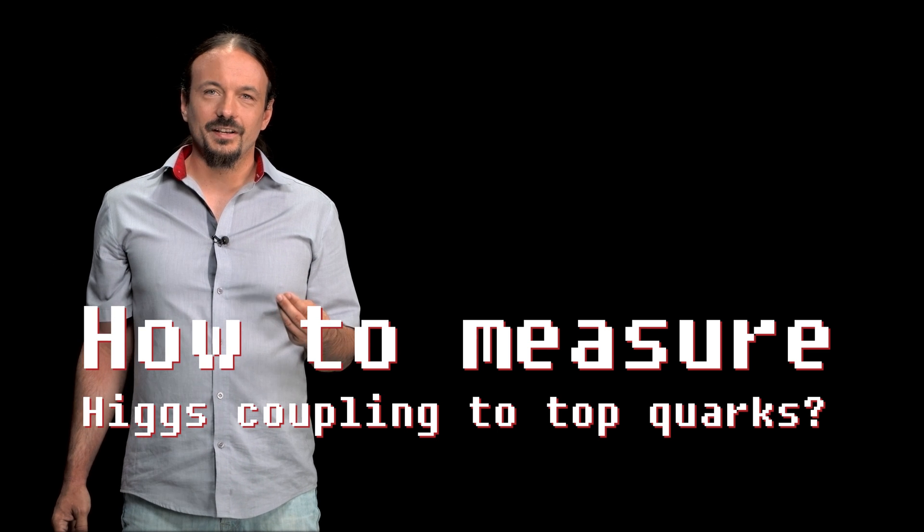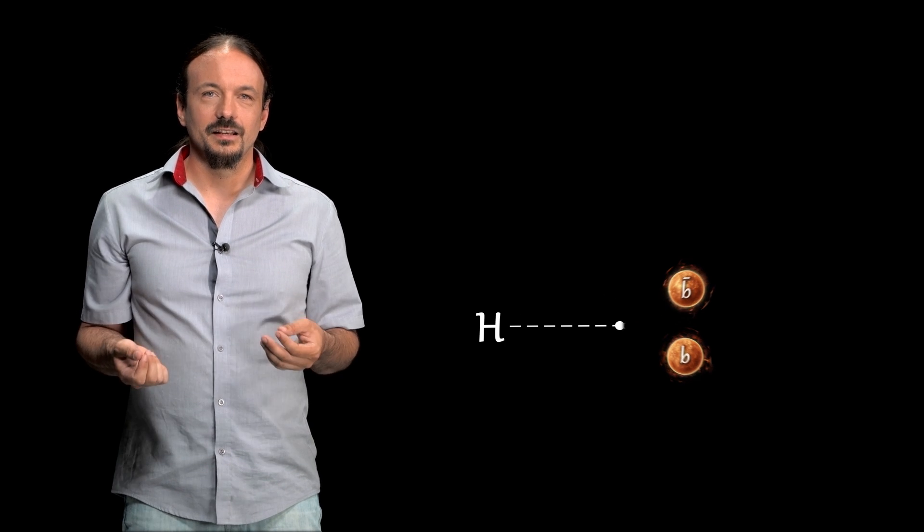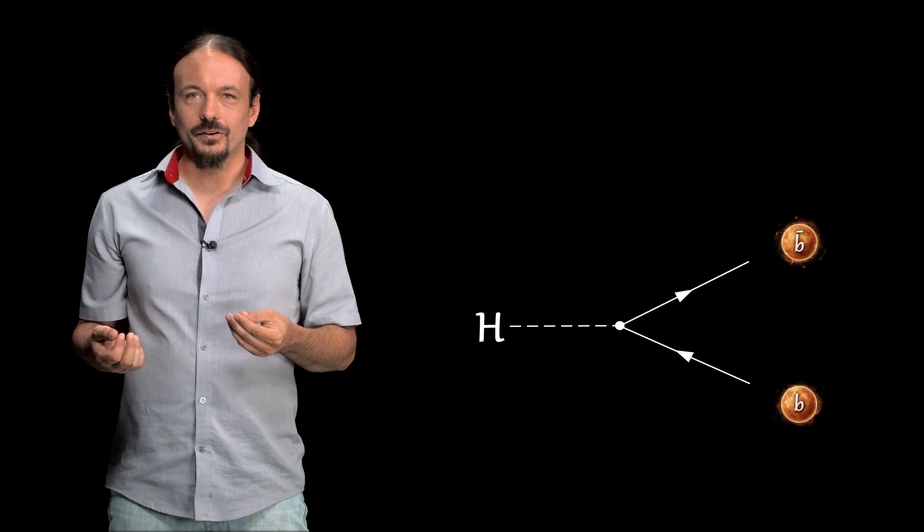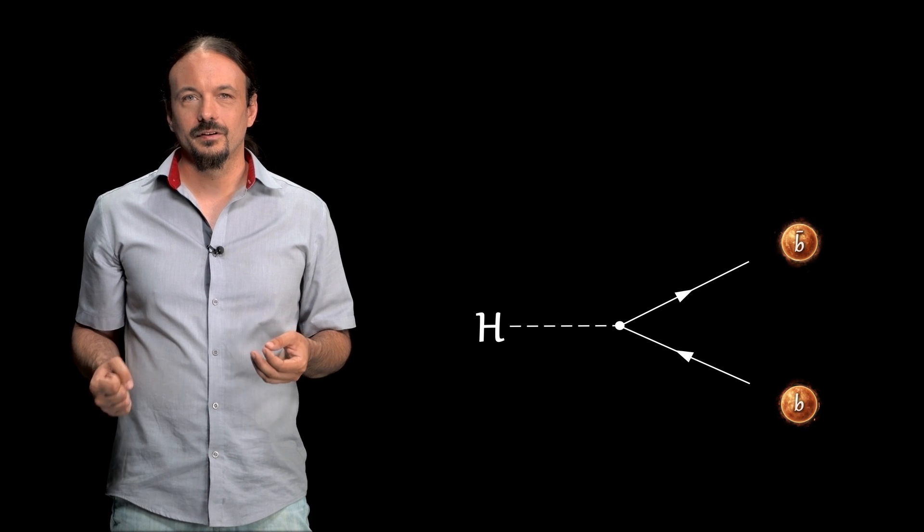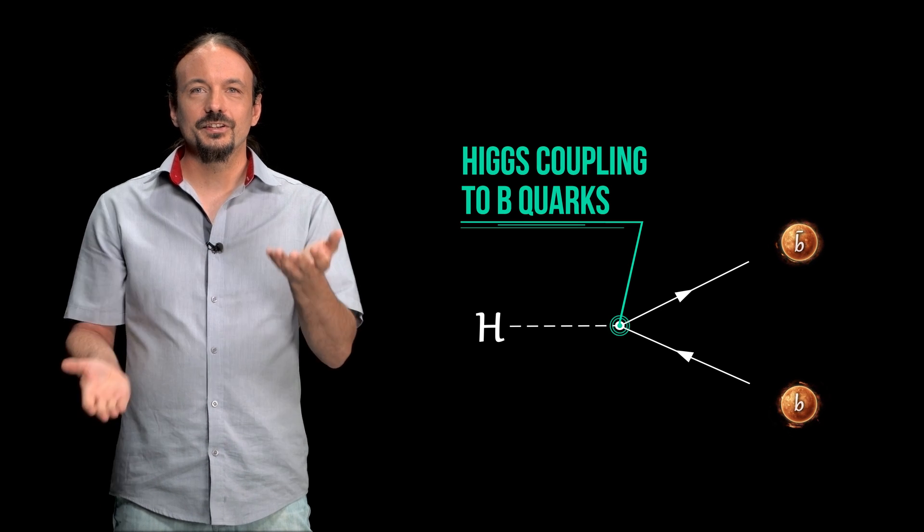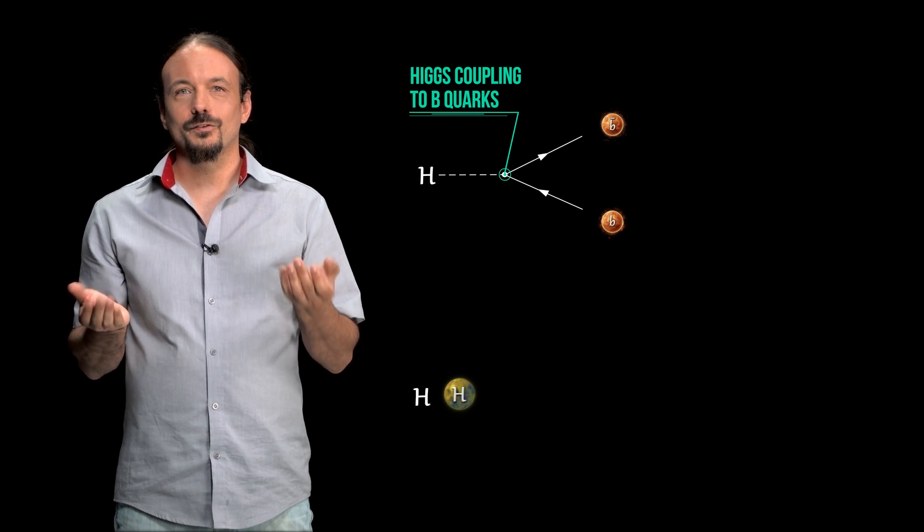So how can we measure the Higgs coupling to top quarks? But first, let's look at how we measure couplings to other particles. This is done by looking at how the Higgs boson decays. If it interacts strongly with a given particle, it's more likely to decay into particles of this type. So we measure the couplings by measuring the probabilities of the Higgs decaying in different ways.